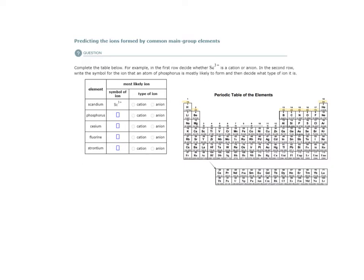So the first element we have here is scandium. If we search our periodic table for the element symbol SC, we find that it is here in group 3B. It's a transition metal. Here's SC, and they tell us that the symbol of the ion that it forms is SC with a charge of 3 plus, SC3+.